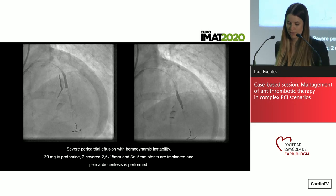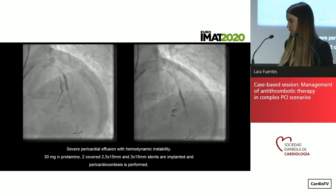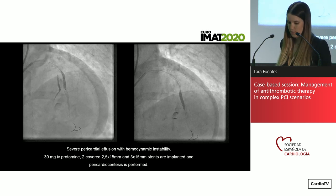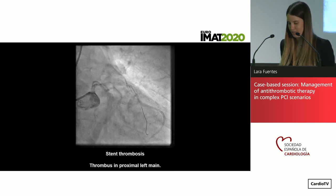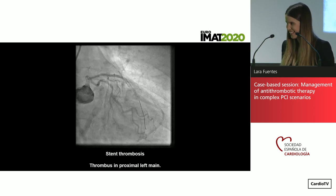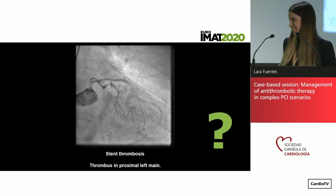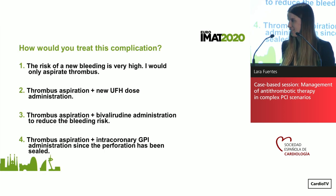The patient now has severe pericardial effusion with hemodynamic instability, requiring emergent pericardiocentesis. The decision was to reverse anticoagulation with protamine and implant two covered stents. The perforation is sealed, but there is another important problem: stent thrombosis, with a large amount of thrombus in the left main. The anticoagulation was only partially reversed. Now: coronary perforation apparently sealed by two covered stents and partial heparin reversal with protamine — how would you treat this complication?